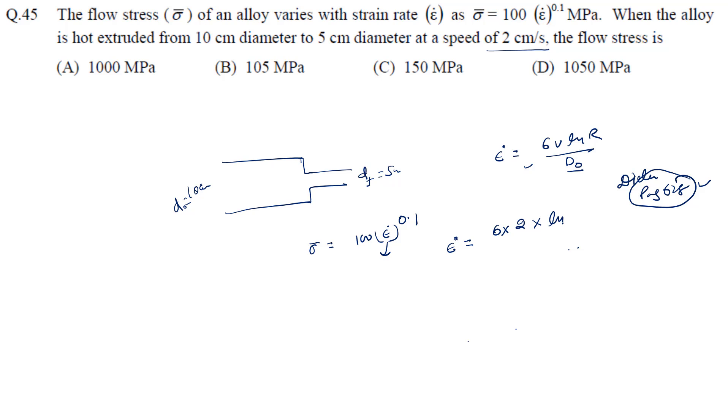This equals 12 times ln of d naught square by df square, divided by d naught. With d naught as 10 centimeter and df as 5, this becomes 12 ln 4 divided by 10, which equals 1.66. So the strain rate is 1.66.